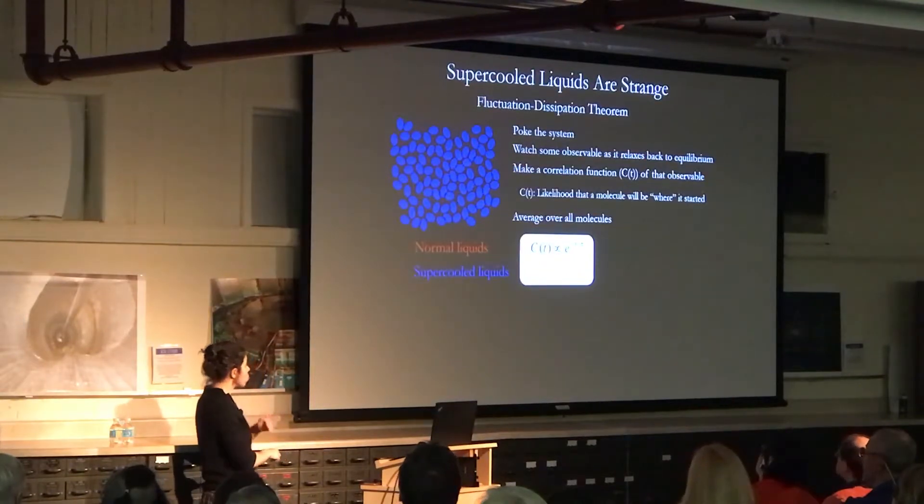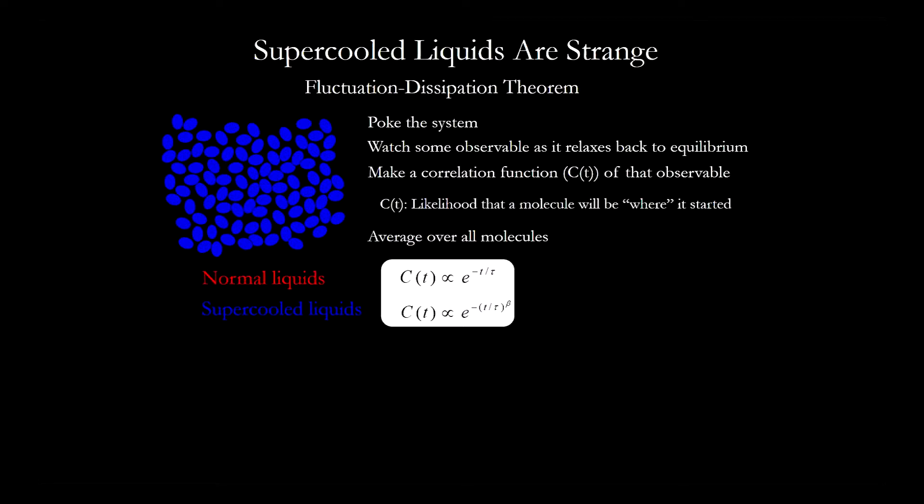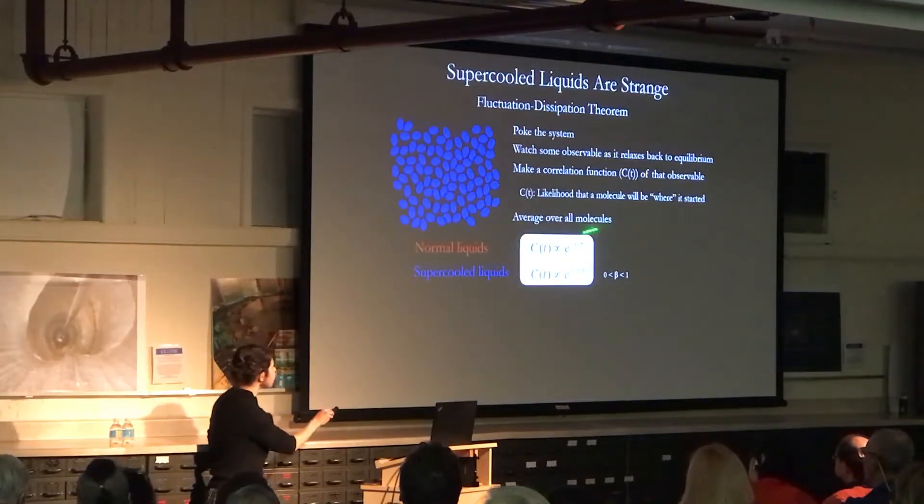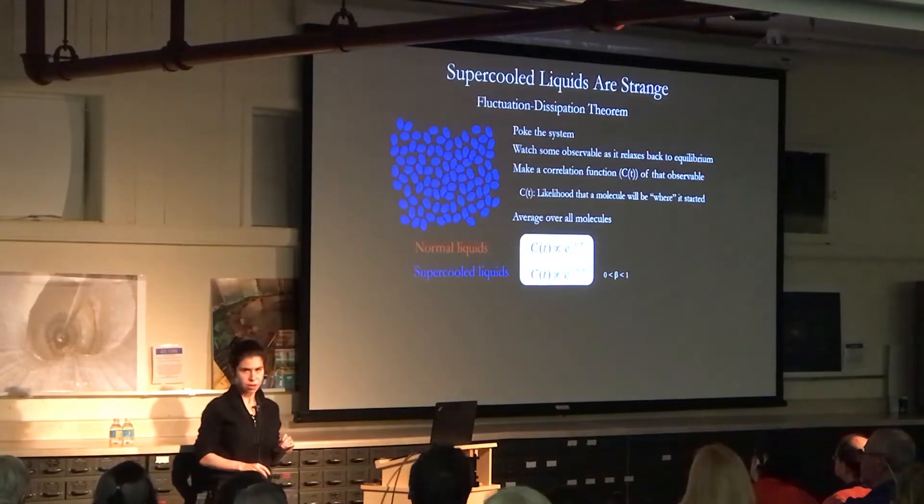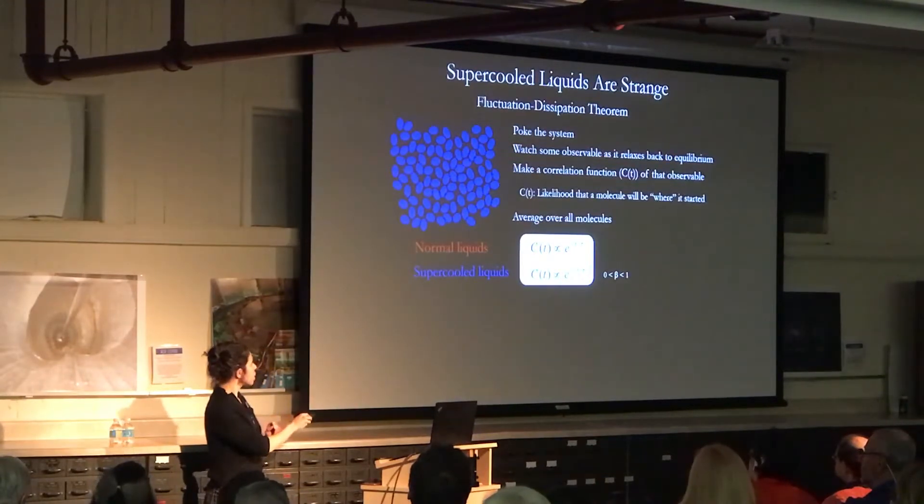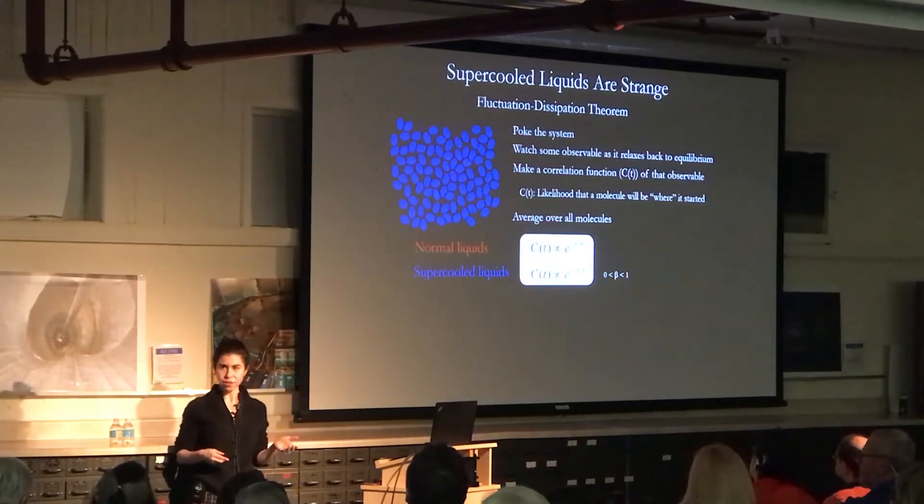If it's a supercooled liquid, we do the exact same experiment and we have a different functional form. It's almost the same, but it gets this little exponent beta, which goes between 0 and 1. So this is called an exponential decay, and this is called a stretched exponential decay.